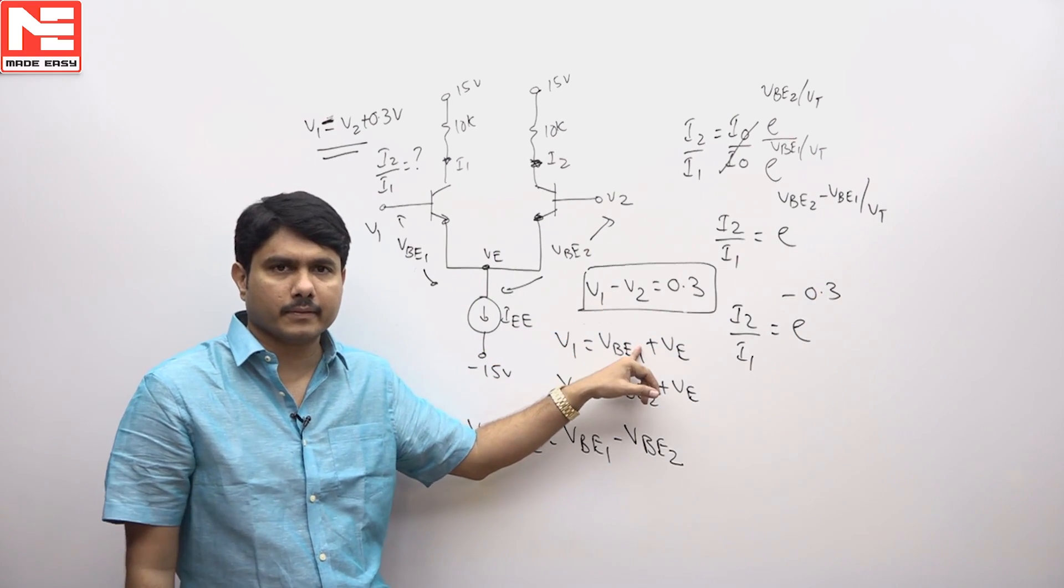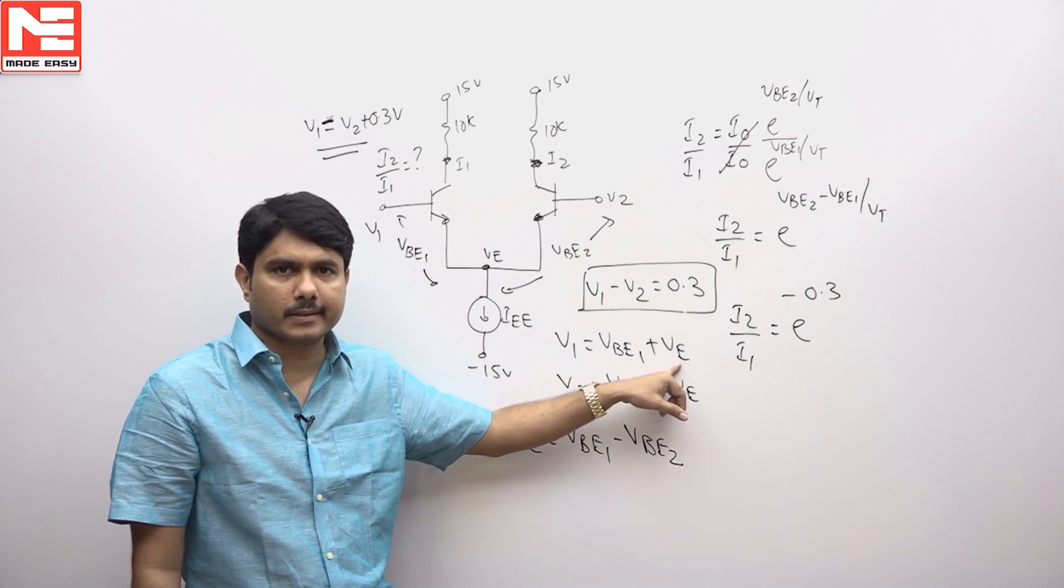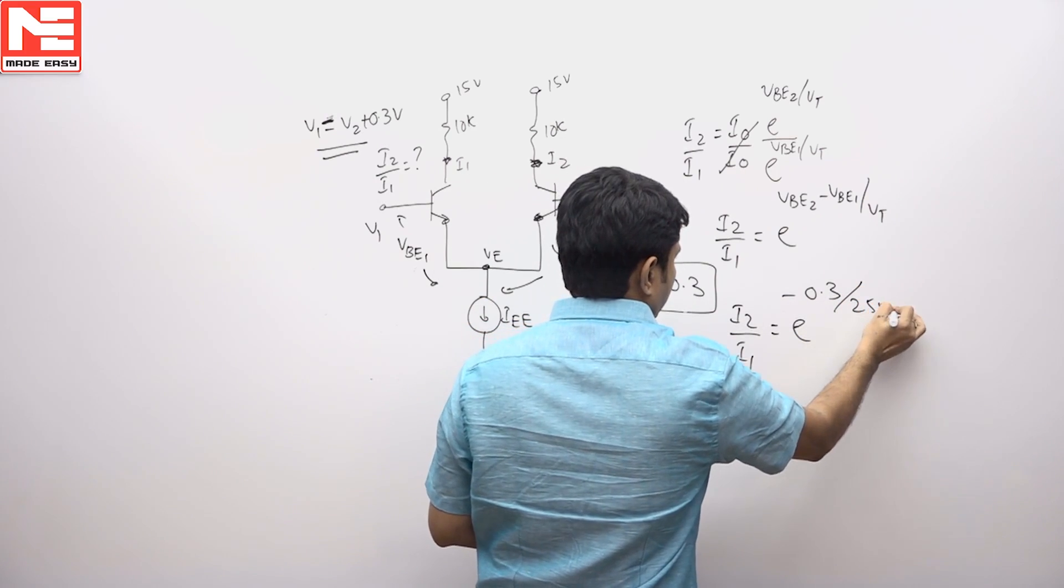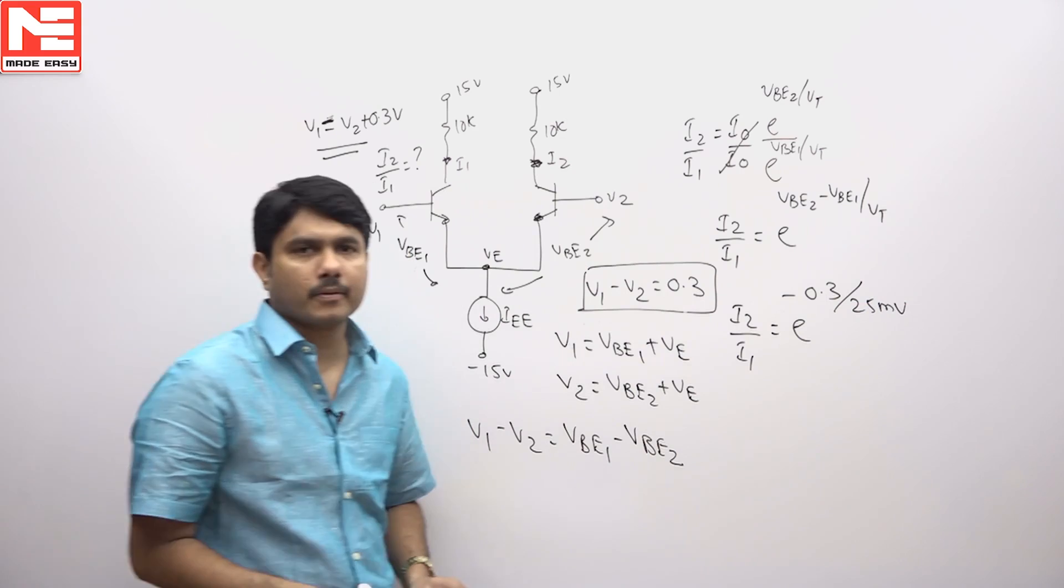Actually in the equation it is V1 minus V2, we are taking V2 minus V1, so minus 0.3 divided by 25 millivolts. If we solve this problem,